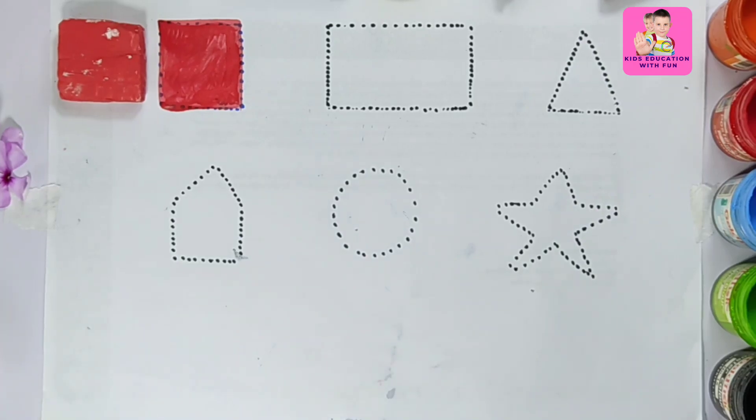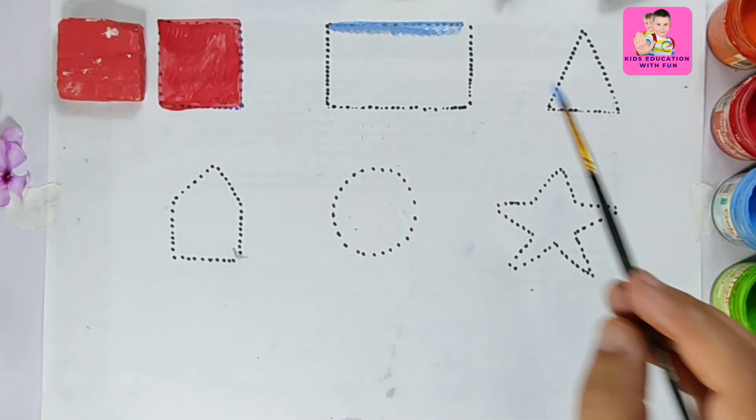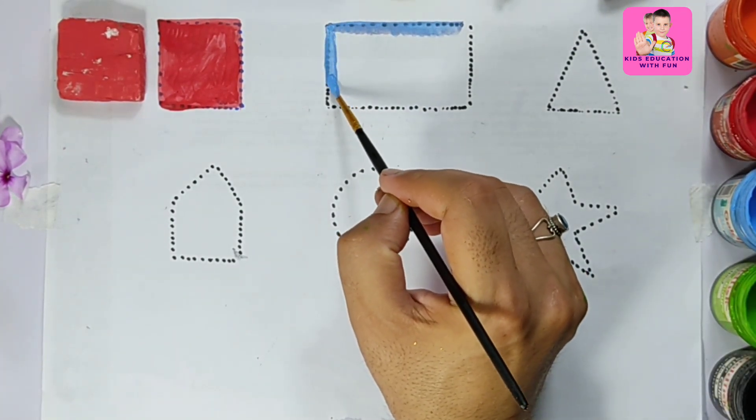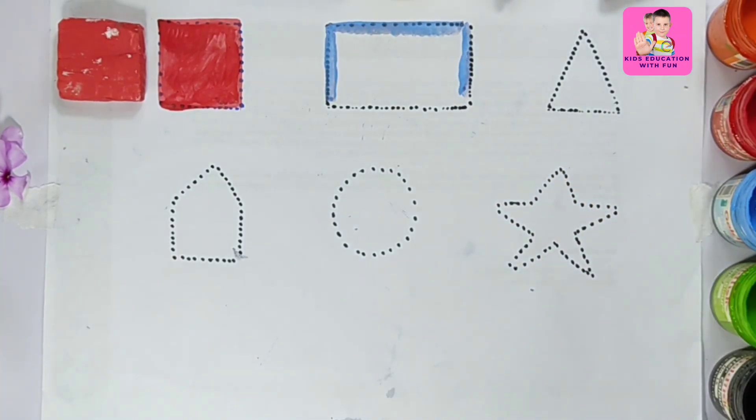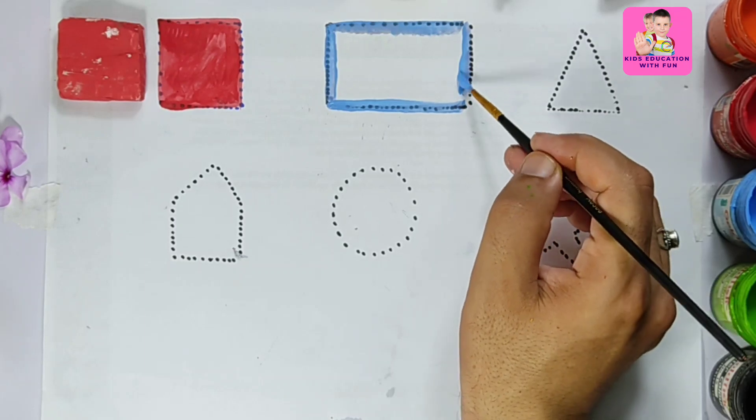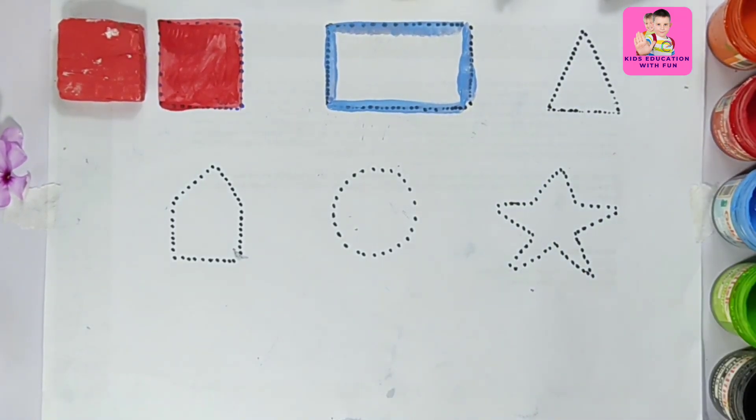Now we will take another color. This is blue color. Let's draw a rectangle and give it color.